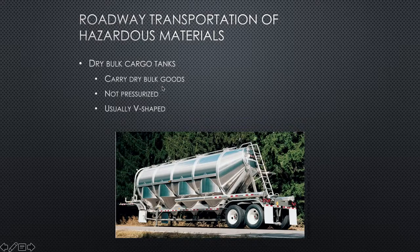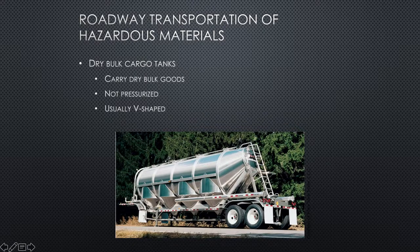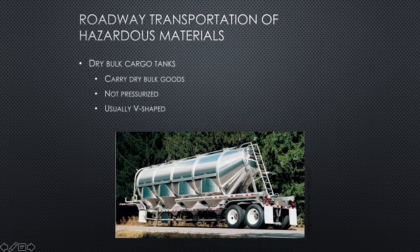Dry bulk cargo tanks carry dry bulk goods, are not pressurized, and are usually V-shaped. This doesn't mean they don't pose an exposure risk — contents could be fertilizer, pesticide, powder, pellets, or grain. You're going to want to identify any placards or labeling that would tell you about that hazard. That's the last topic for this video. This was more technical with a lot of specific details, but keep an overall awareness of how you would get that information if you needed to figure it out.